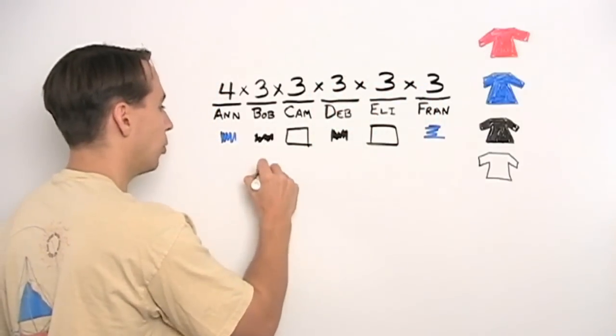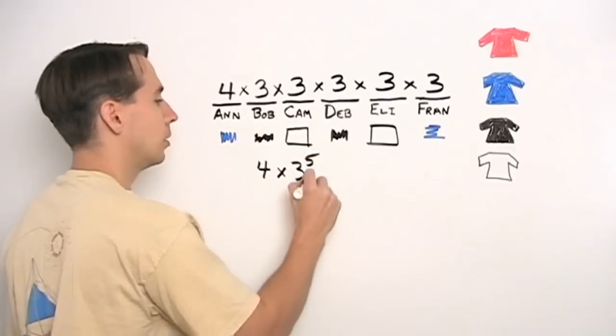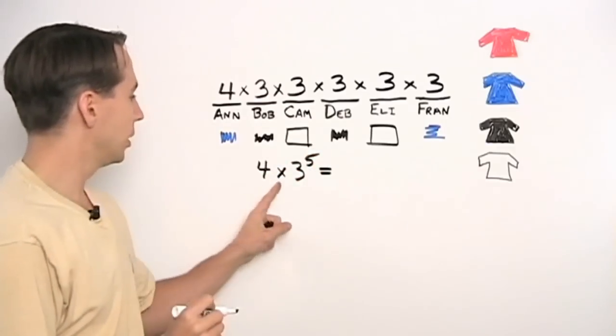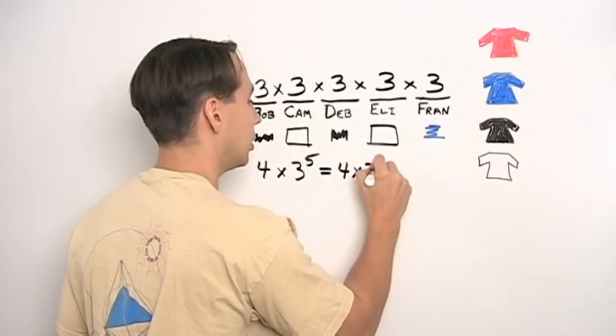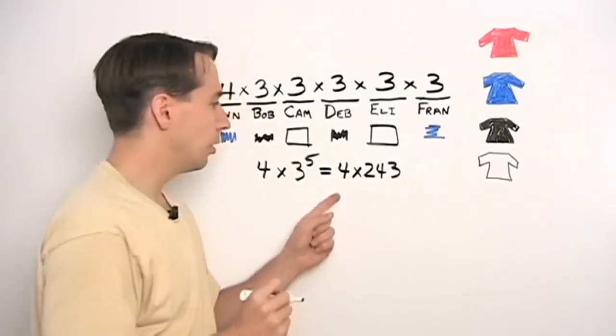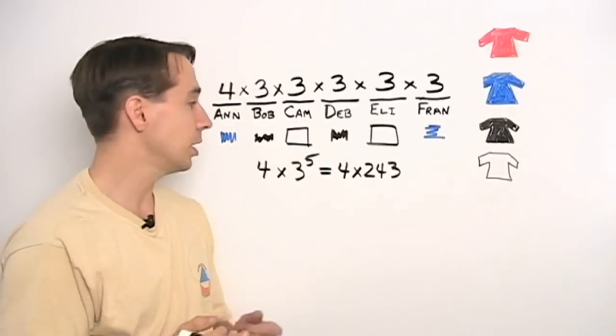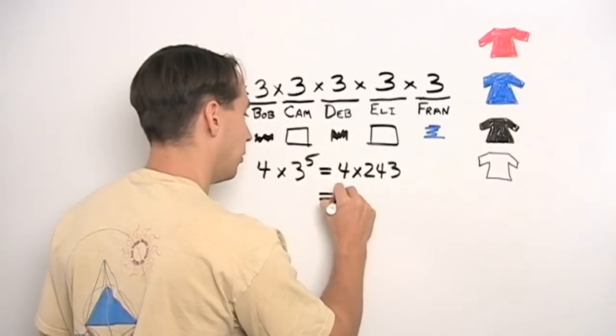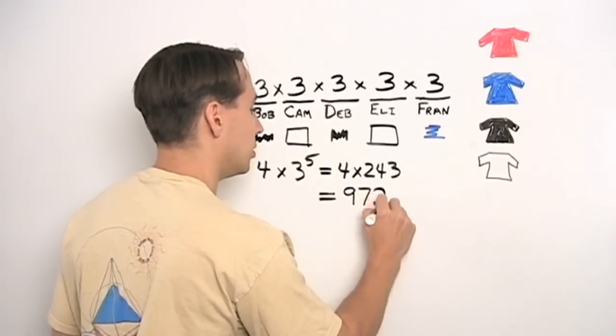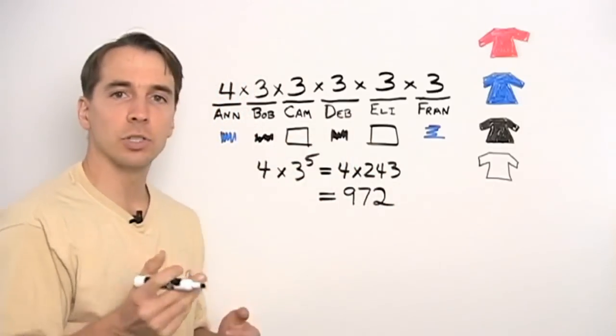And now we just compute this. We have 4×3^5. And that equals, let's see, 3^5 is 243. And 4×243, 4×240 is 960, 4×3 is 12, 960 plus 12 is 972. So they have 972 ways that they can choose their shirts.